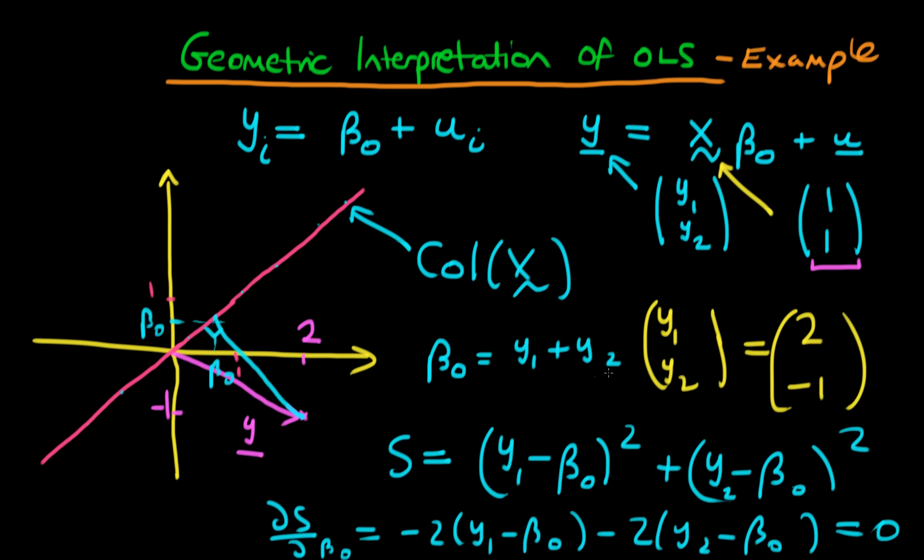Which we could have guessed anyway if we thought about this regression model a little bit more, because essentially there's not going to be a value of beta 0 which guesses y better than the sample mean in this example.